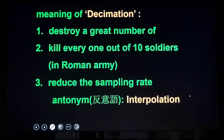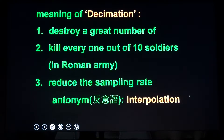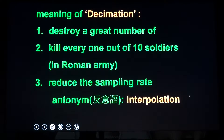What is decimation? The meaning of decimation is to destroy a great number of. In the Roman army, if the army had some desertion or didn't obey a superior, they would kill every one out of 10 soldiers — that's the origin of decimation. They wanted to keep the army force but punish them, so they killed every 10th person. In signal processing, decimation means to reduce the sampling rate. The inverse term is interpolation — interpolation increases the sampling rate, decimation reduces it.